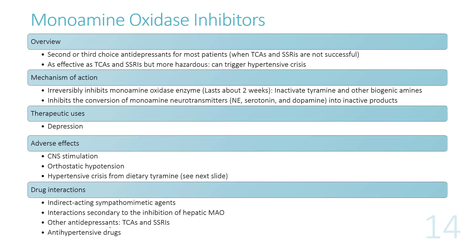The third class of antidepressants are monoamine oxidase inhibitors (MAOIs). MAOIs are usually given when TCAs or SSRIs have already been tried without success. They are reserved as a later option because their side effects are more dangerous — they can trigger a hypertensive crisis.